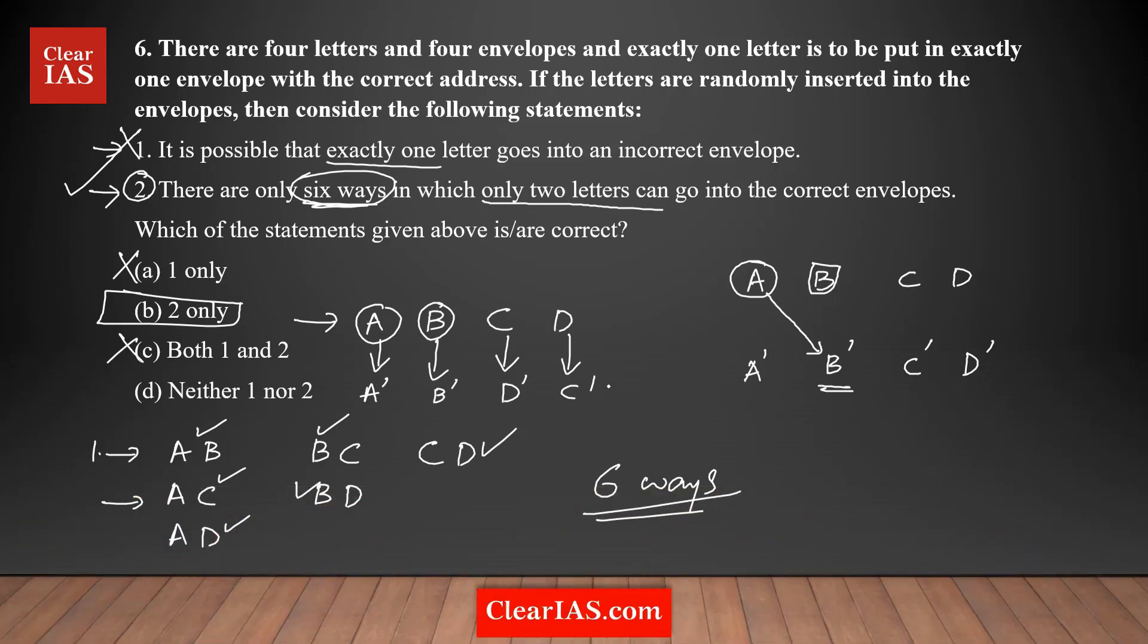Also, you can use the permutation and combination concepts here. Statement two is saying that how many ways you can select two letters out of four. So which is nothing but out of four letters, how many ways you can select two? Four C two. So here we have listed down the different scenarios. Instead of that, you can always use four C two, which is nothing but four times three divided by two factorial, which is two. We can cancel it out. It's two, two times three is equal to six.